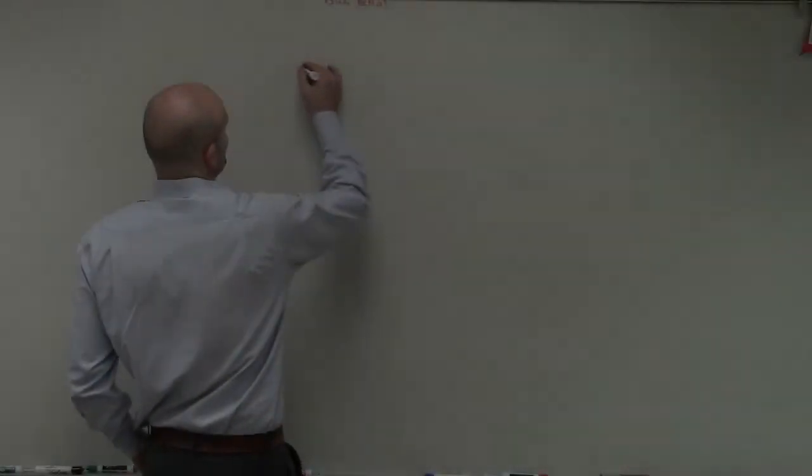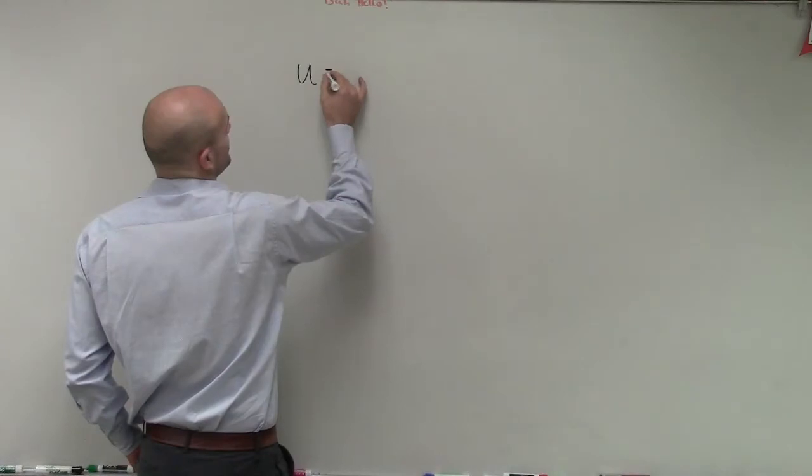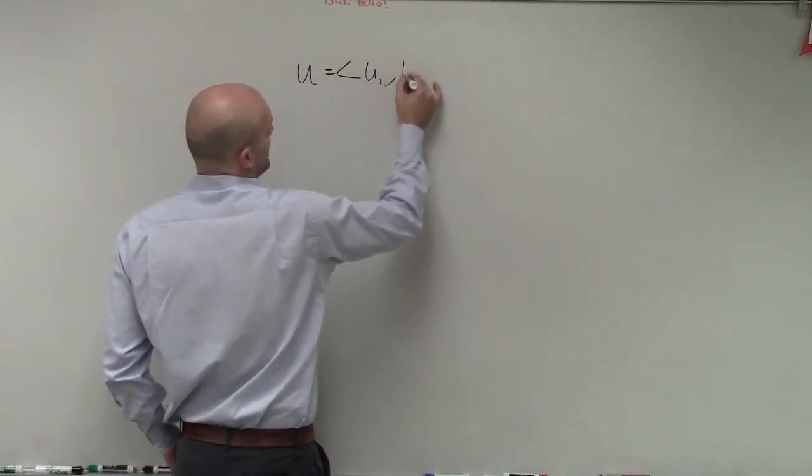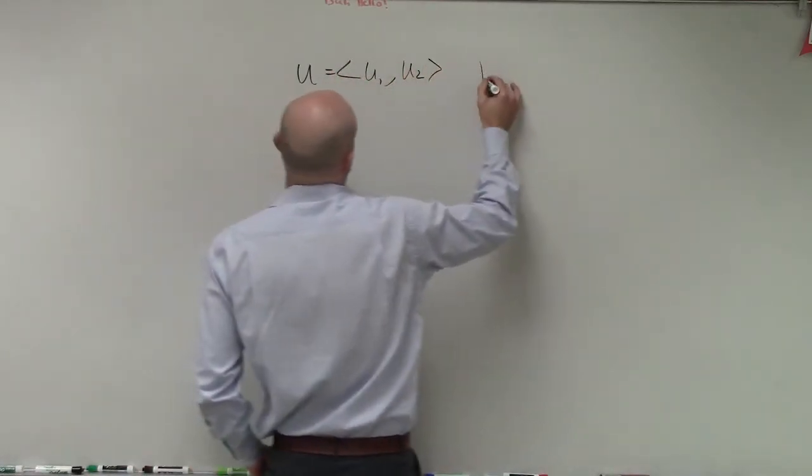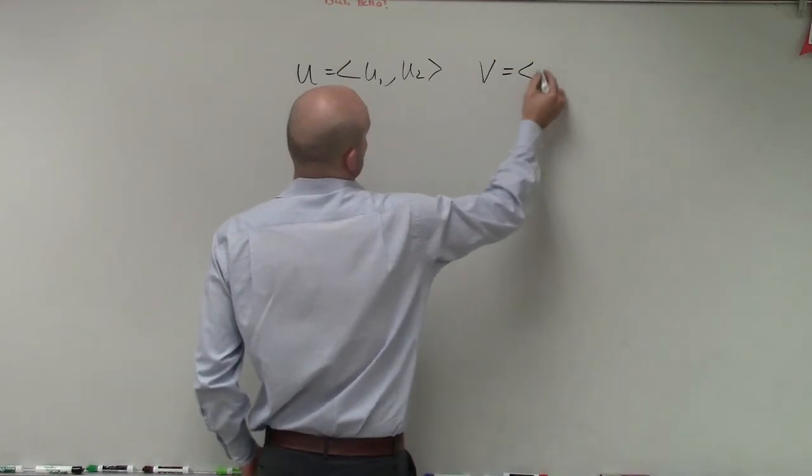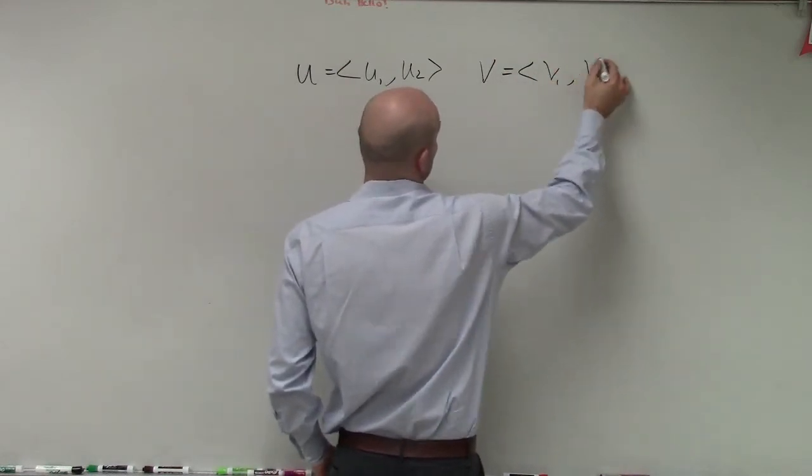It's a dot product. If we have two vectors, u = <u1, u2> and v = <v1, v2>.